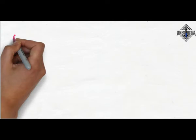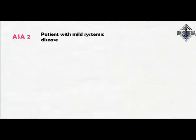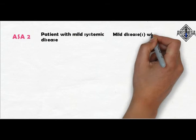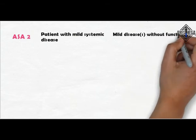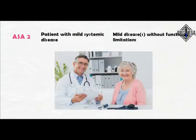ASA 2 — Patient with mild systemic disease. Patient with mild diseases without functional limitations. For example: current smoker, social alcohol use, pregnant, obesity, well-controlled diabetes or hypertension, and mild lung disease are coming under ASA 2.